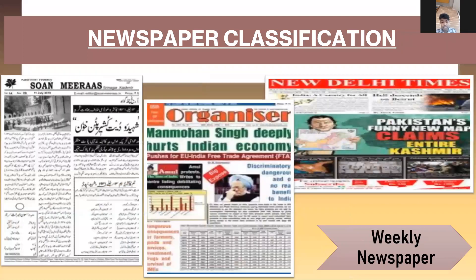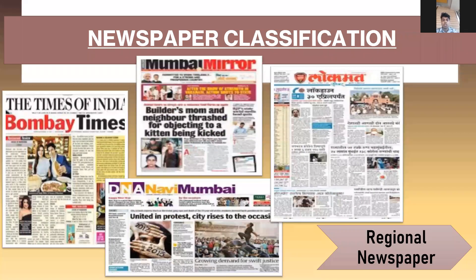Weekly newspapers are published once a week, mostly on Saturday or Sunday. Examples include Stone Miras, published in Jammu and Kashmir; Organizer, a magazine from New Delhi; and New Delhi Times. Regional newspapers are published only for a particular area — a state or city. Examples in Mumbai include Bombay Times, Mumbai Mirror, DNA Mumbai, and Lokmat Mumbai.